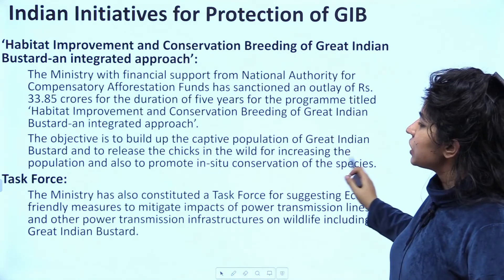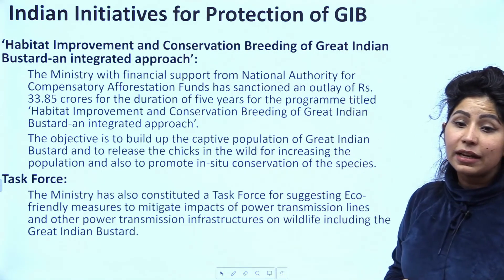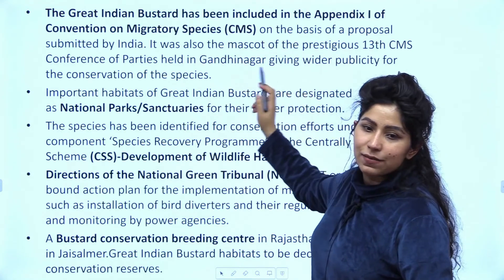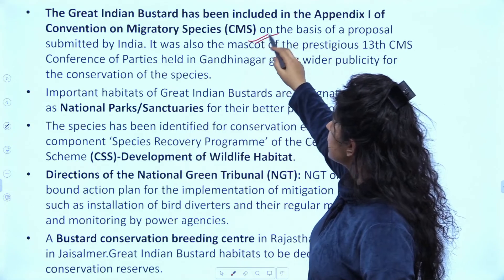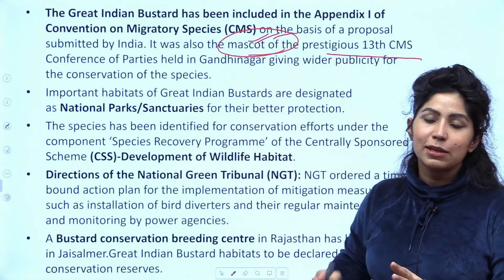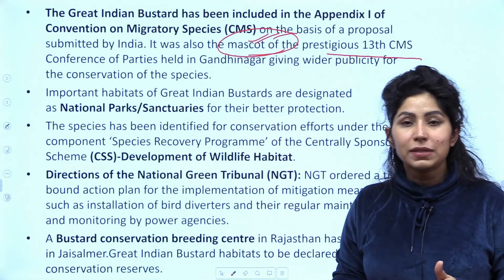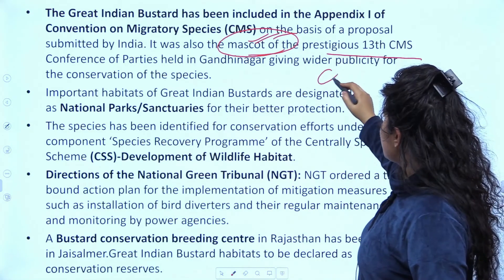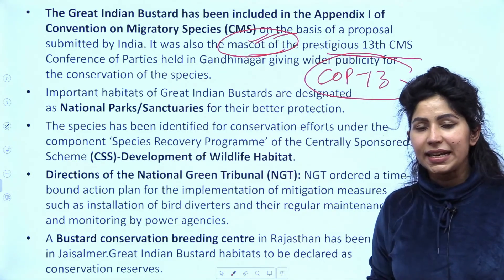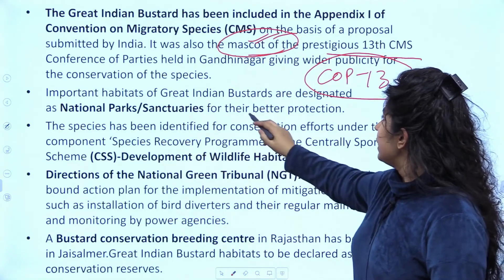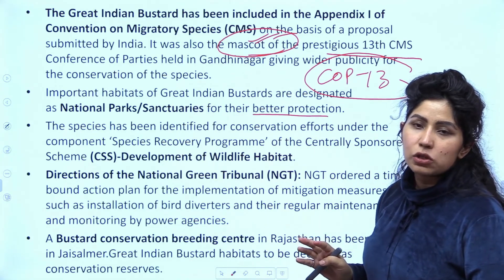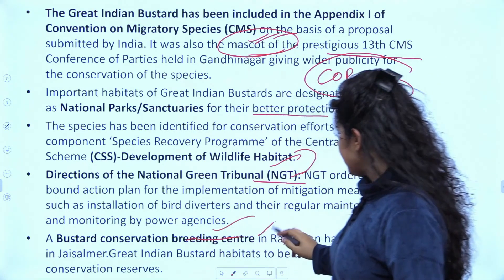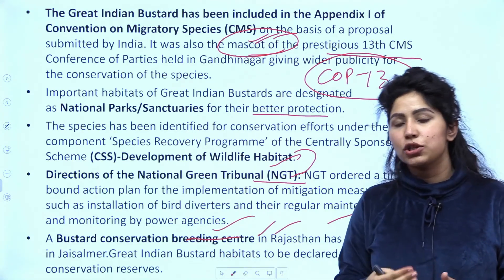Preparing this bird for your exam is very important — it is a part of your syllabus. There is a task force running to protect this bird, and there is habitat improvement and conservation breeding of Great Indian Bustard. It has been listed in Appendix 1 of the Conservation of Migratory Species and was the mascot of the 13th CMS COP held in Gandhinagar, Gujarat, because India considers conservation of this bird a top priority. There is a Desert National Park located entirely for its conservation, and Bustard conservation breeding centres are in many parts of Rajasthan, especially in Jaisalmer where it is naturally found.